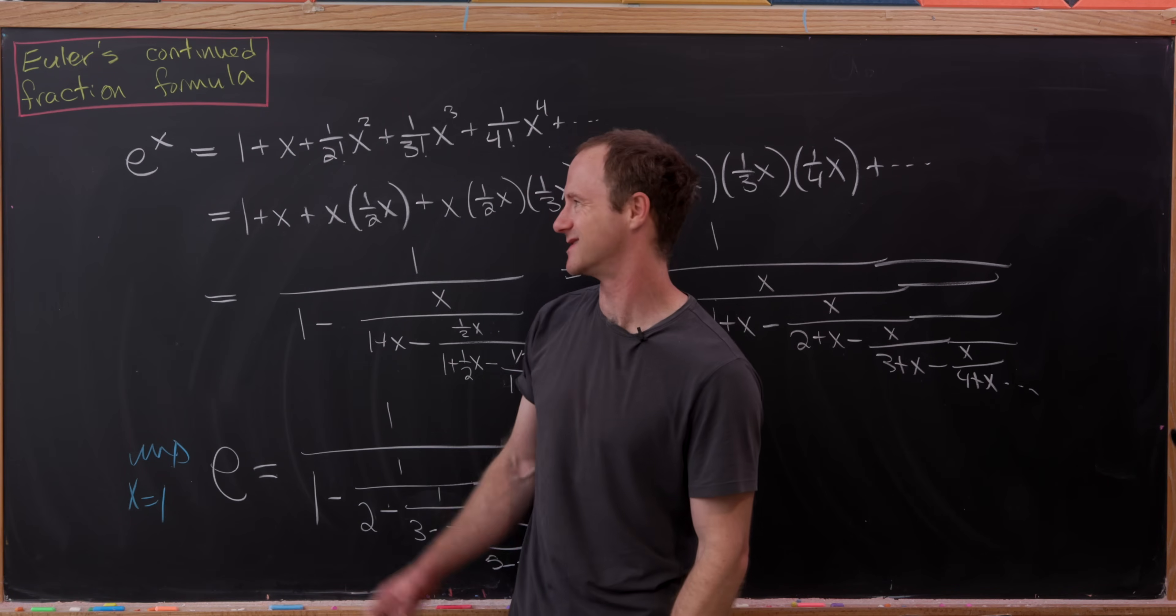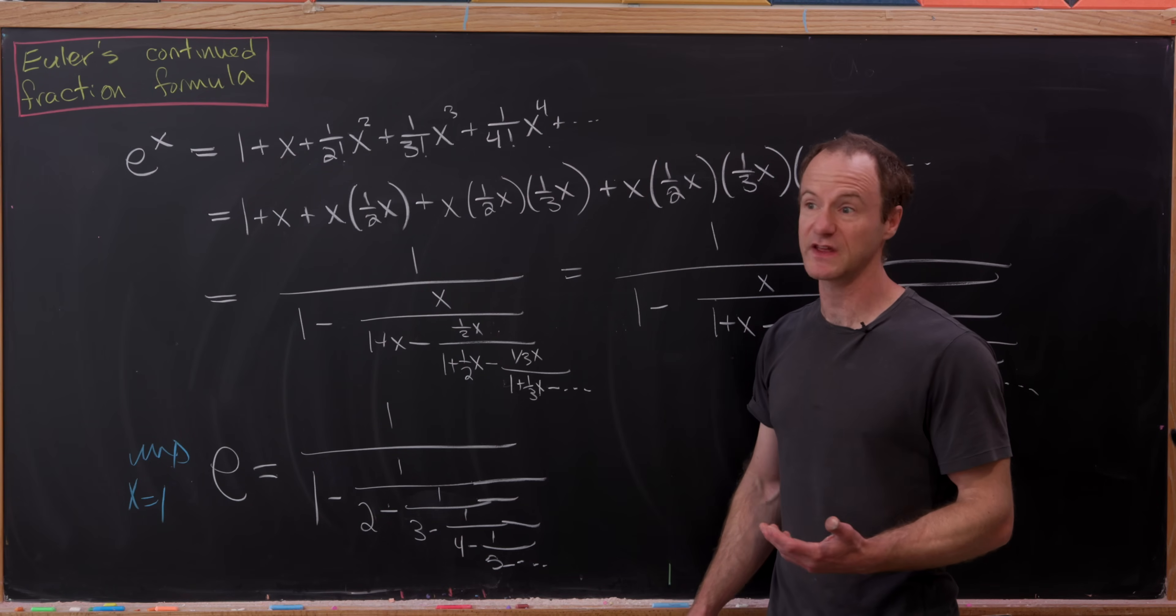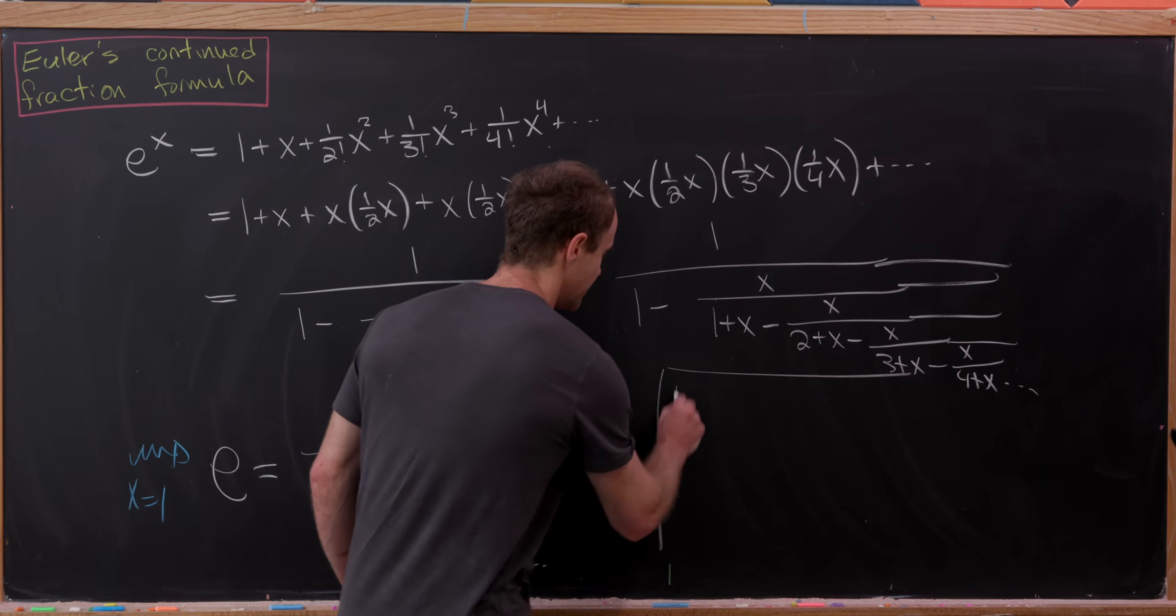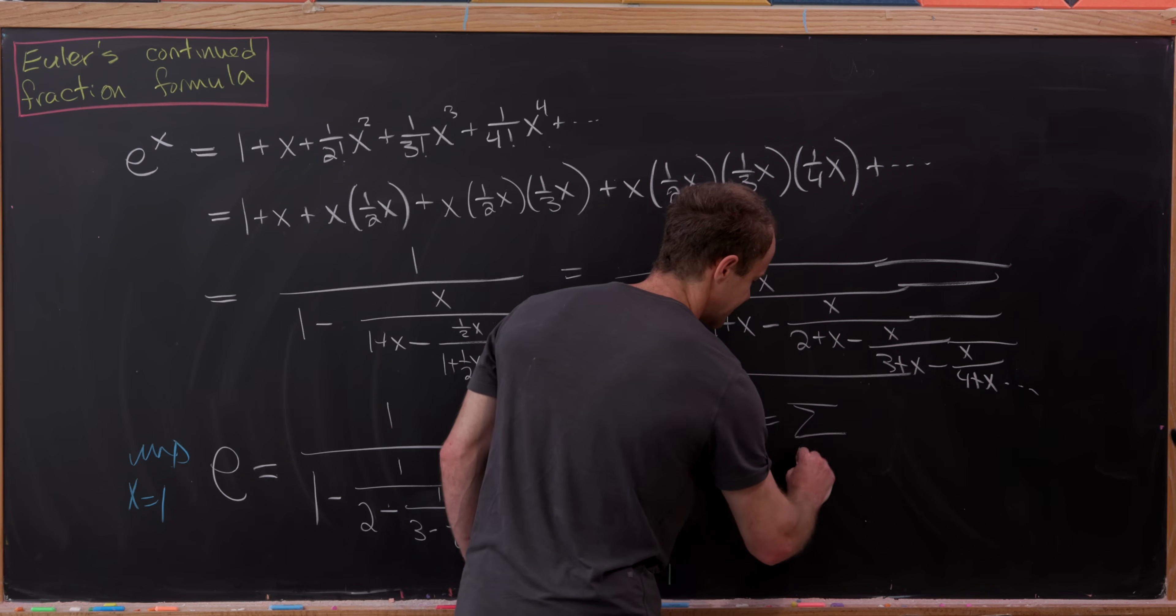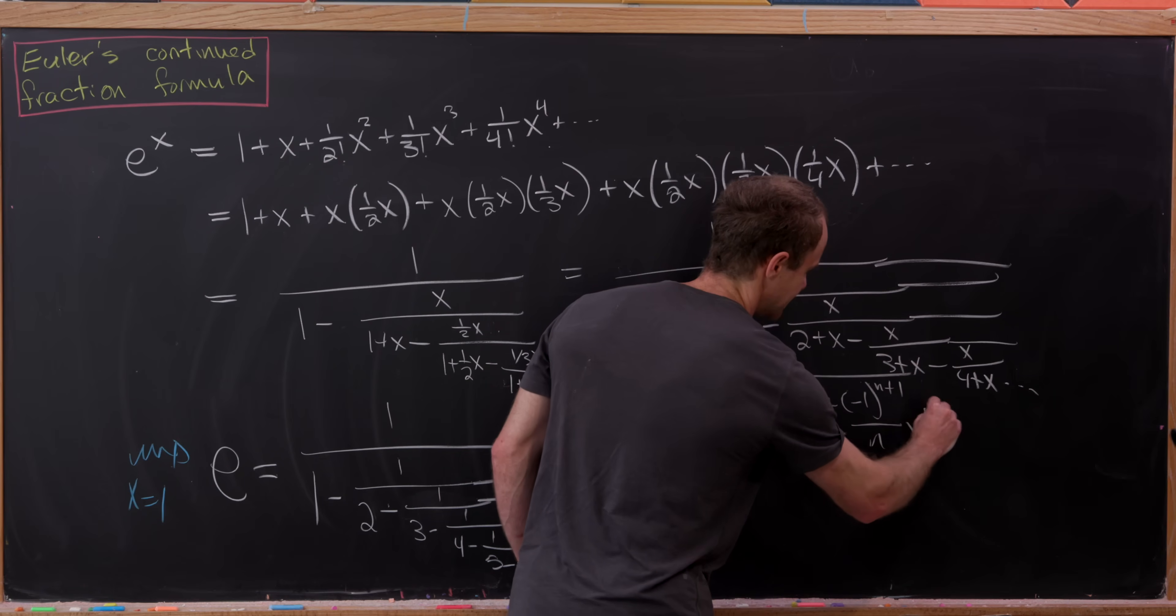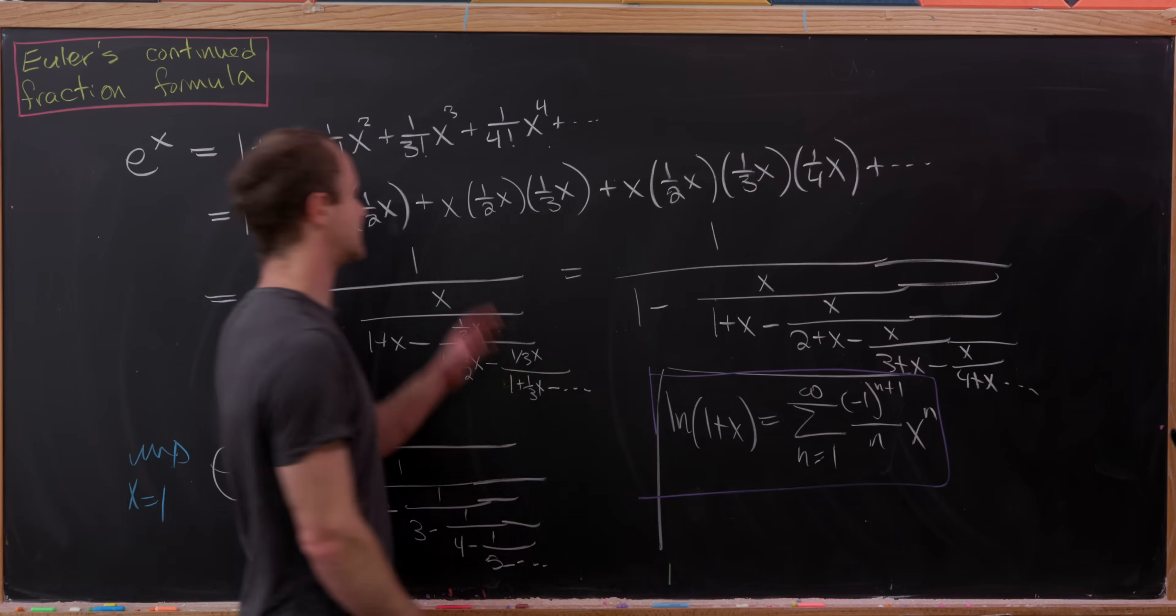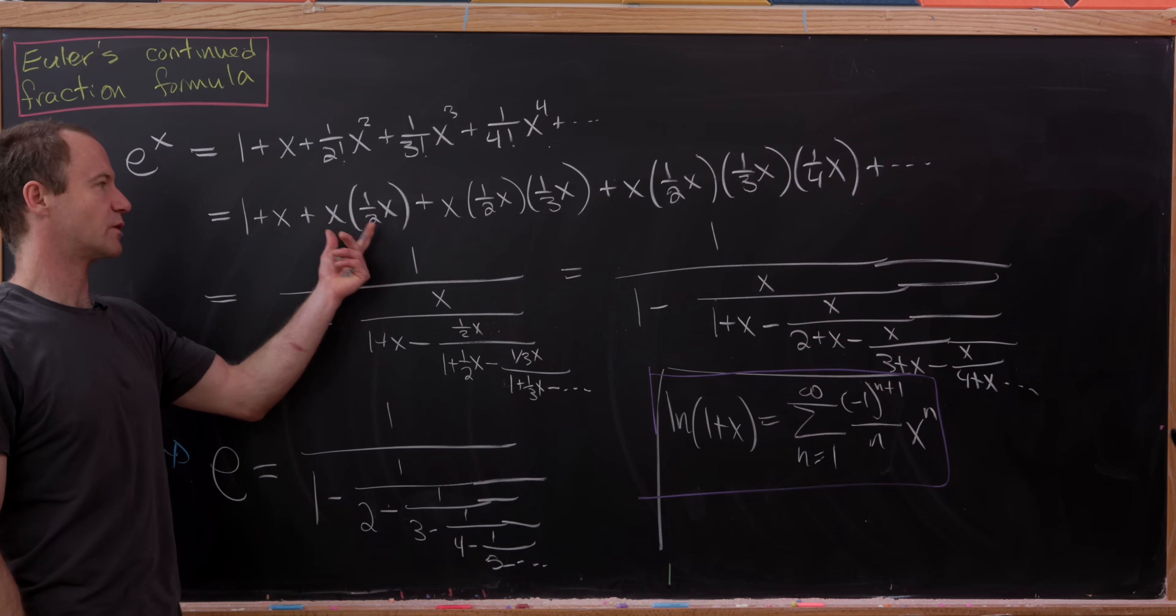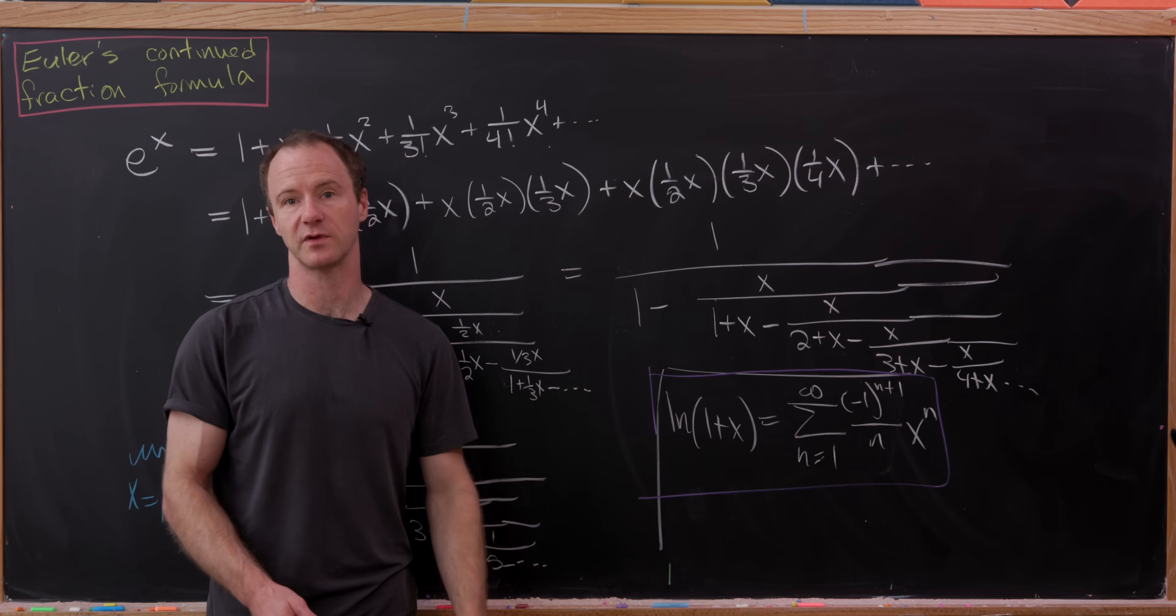But of course, the power of Euler's original formula is not just to find the continued fraction representation of e, but you could really do it for a number of different functions. So perhaps you might want to try it with the series expansion of the natural log of 1 plus x. Let's recall that that has a series expansion as the sum as n goes from 1 to infinity minus 1 to the n plus 1 over n times x to the n. And I think using the same kind of methods that we did over here, maybe breaking up the term into the previous term multiplied by something will give you a clear path to using this nice formula of Euler. And that's a good place to stop.